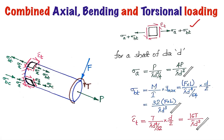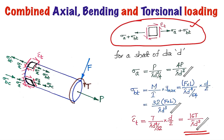For a shaft of diameter d, sigma_A = 4P/πd², the tensile bending stress at the topmost fiber sigma_BT = 32M/πd³ where M = F·L, and the torsional shear stress tau_T = 16T/πd³. These are the different stresses and this gives the state of stress for the critical element. In the next video we will take this combined loading case and use this state of stress to explain principal stresses and the Mohr's circle. Hope you understood, and thank you.